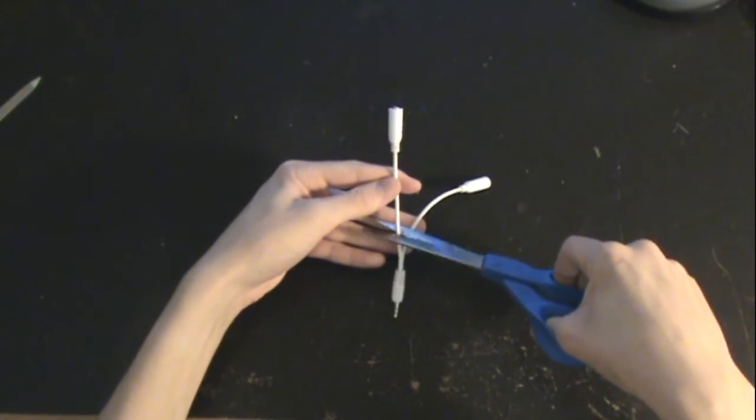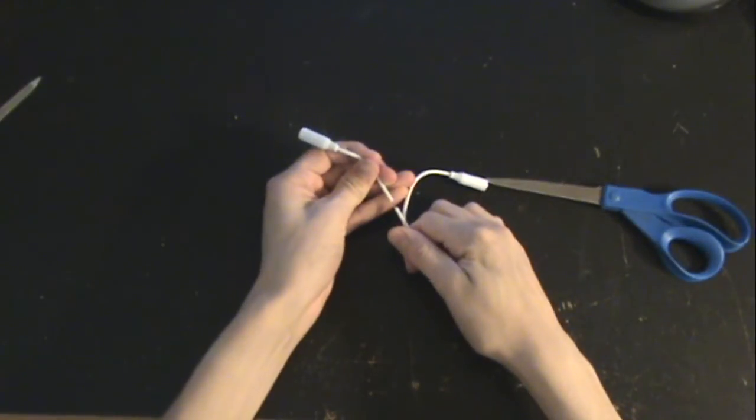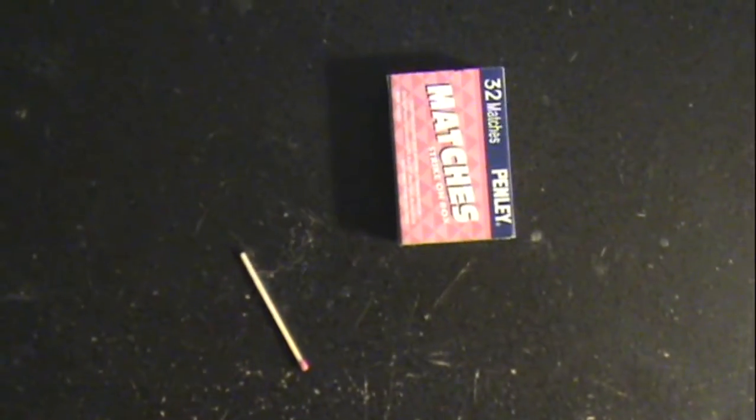First, cut the headphone splitter or splitters at the base. Then strip the wires. Now take your four pole headphone connector and do the same.